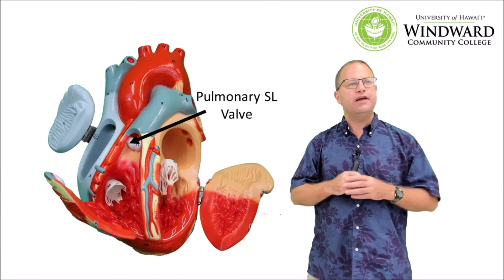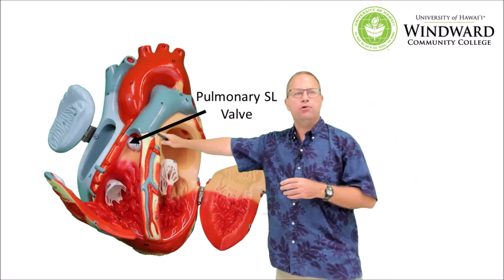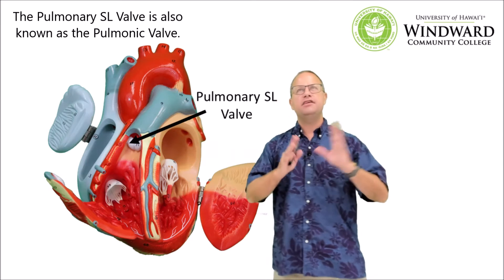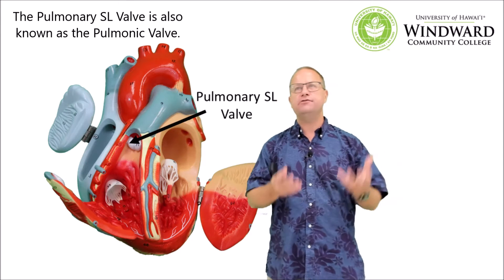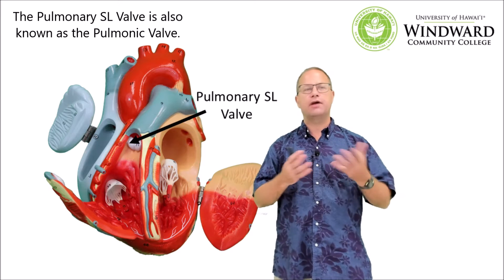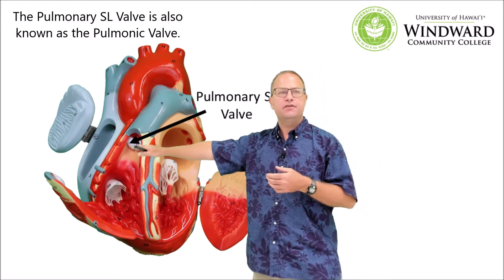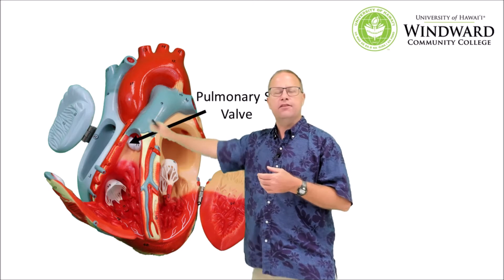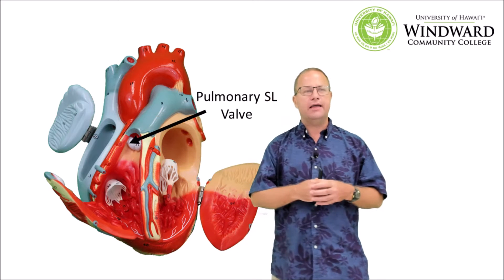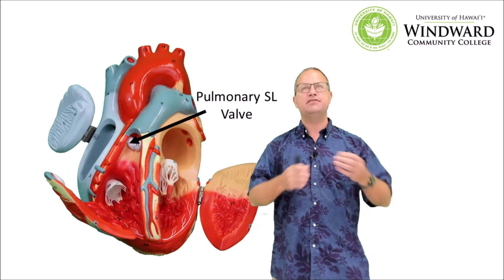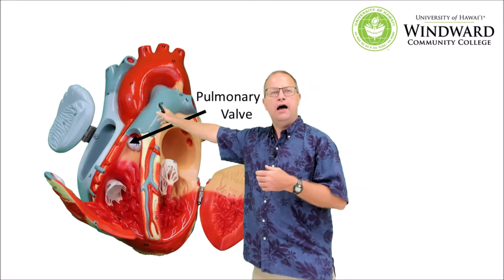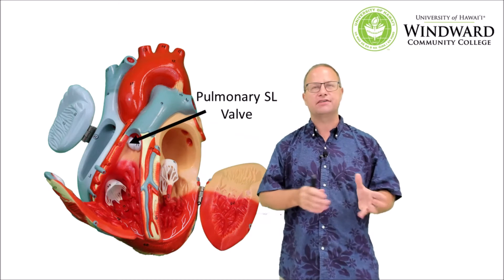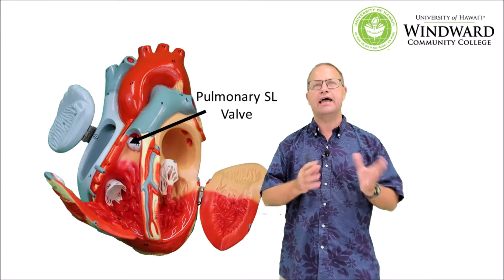Another valve we can see here is the pulmonary semilunar valve. The semilunar valves sit between the ventricles and the great blood vessels that leave them. This one is between the right ventricle and the pulmonary trunk, and it prevents backflow of blood into the ventricles once the ventricles start to relax, or undergo diastole.